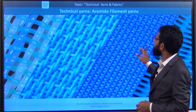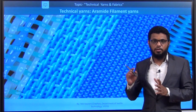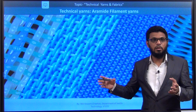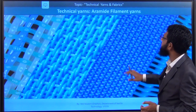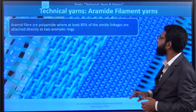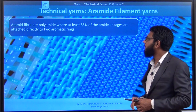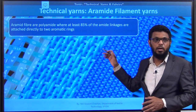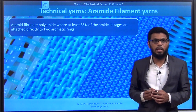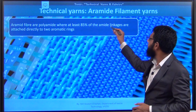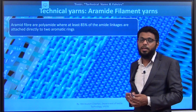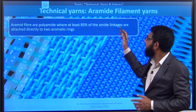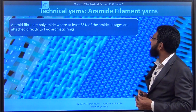The technical filament yarns include aramid filament yarn. We have already discussed the aramid fiber in the introductory section on the influence of fiber. That fiber can be drawn in the form of filament yarn for use in technical applications. Aramid fibers are polyamide where at least 85% of amide linkages are attached to aromatic benzene rings. It is similar to nylon, but while nylon has an aliphatic chain, aramid has a benzene ring. As per definition, 85% should be covered with amide linkage for it to be called aramid fiber.